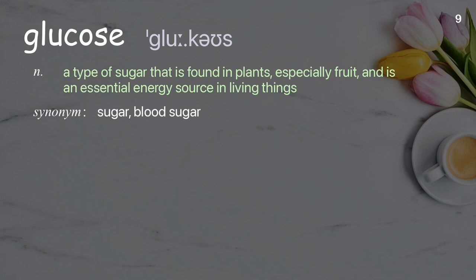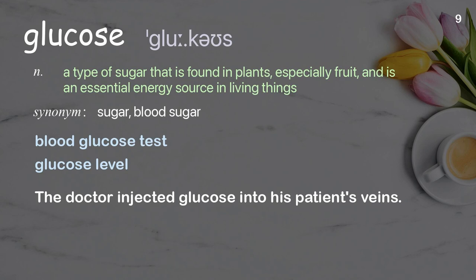Glucose: a type of sugar that is found in plants, especially fruit, and is an essential energy source in living things. Examples: blood glucose test, glucose level. The doctor injected glucose into his patient's veins.